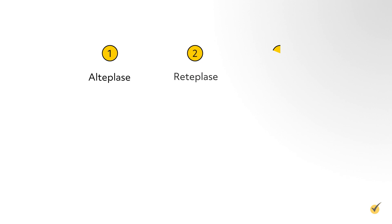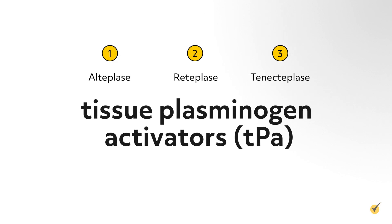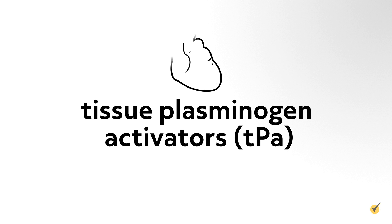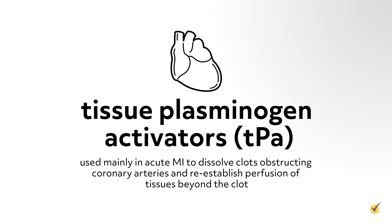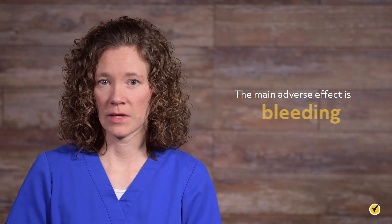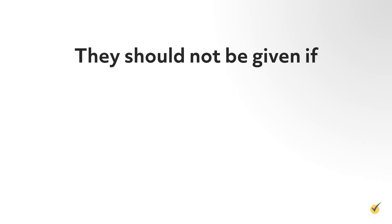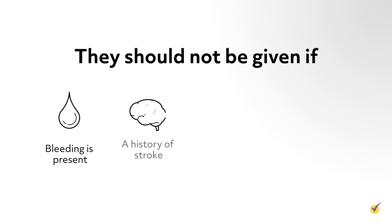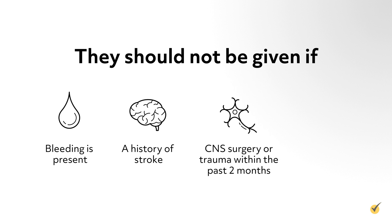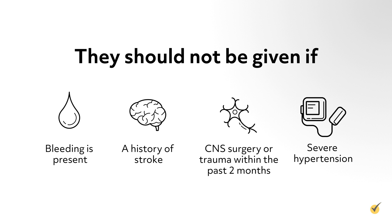Alteplase, reteplase, and tenecteplase are tissue plasminogen activators, or TPA, used mainly in acute MI to dissolve clots obstructing coronary arteries and reestablish perfusion of tissues beyond the clot. The main adverse effect is bleeding, which could be internal or external. So they should not be given if bleeding is present, if there is a history of stroke, CNS surgery or trauma within the past two months, or severe hypertension.